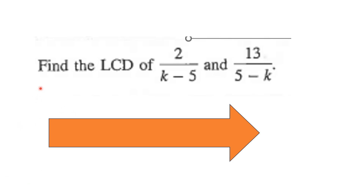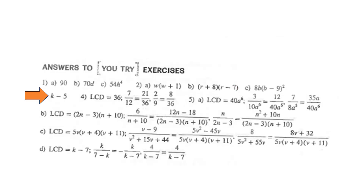Here's a problem for you to try. Find the least common denominator of 2 over k minus 5 and 13 over 5 minus k. Please pause the video and try this. Once you finish, return to the video to see how you did. The answer you should have gotten for this one is k minus 5.